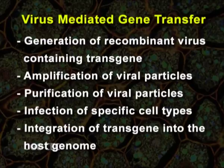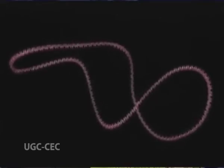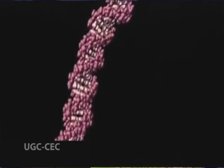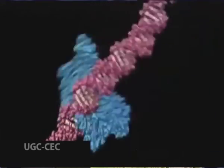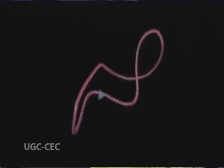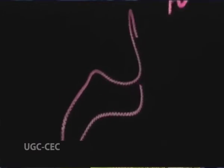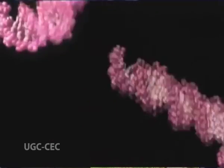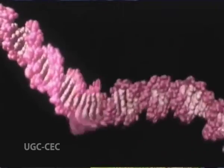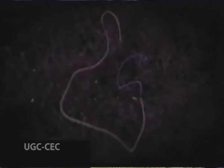Further stages include infection of specific cell types and integration of transgene into the host genome. The viral genes which are not vital for viral survival are removed and the gene of interest is inserted at this position. In certain cases, two genes can be inserted in the double expression cassette of the viral transfer vector. This process is time consuming, costly, and laborious, and it demands a high level of biosafety requirements.